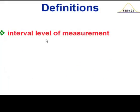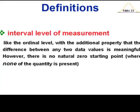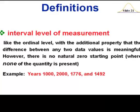Interval levels of measurement involve numbers, but those numbers are such that there's no natural zero starting point. Some examples of that would be years — 1000, 2000, 1776, 1492. We also have AD years and BC years. So the zero here is really not a natural starting point since there are years before year zero.